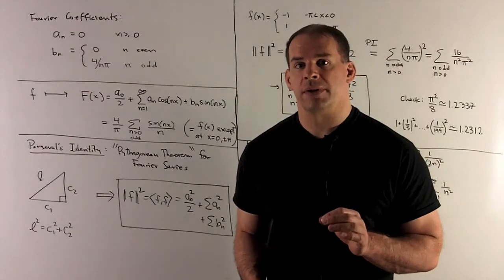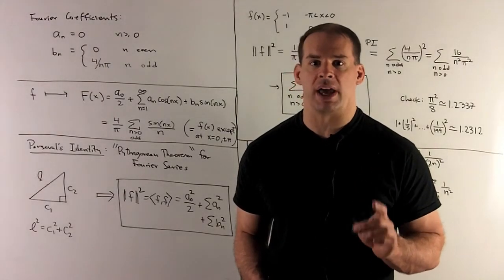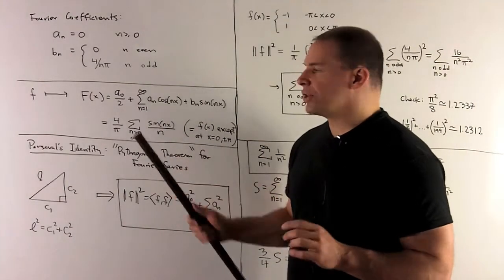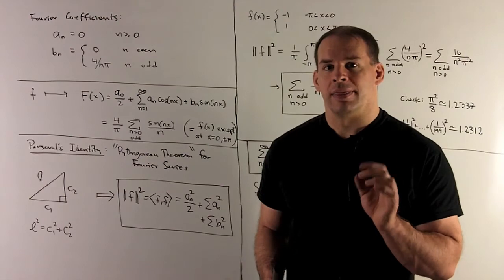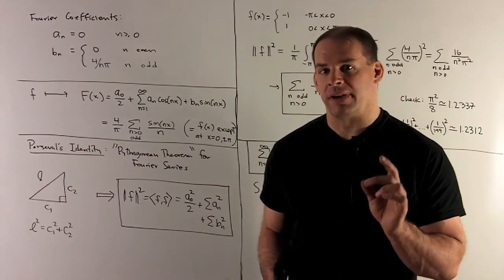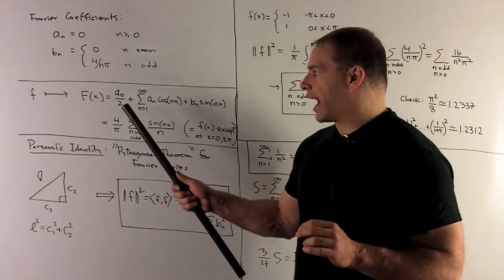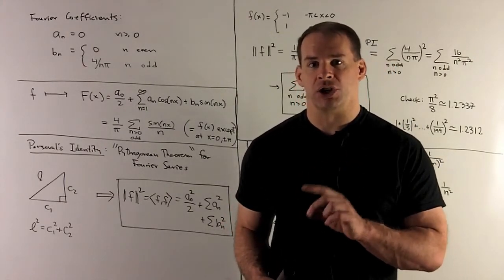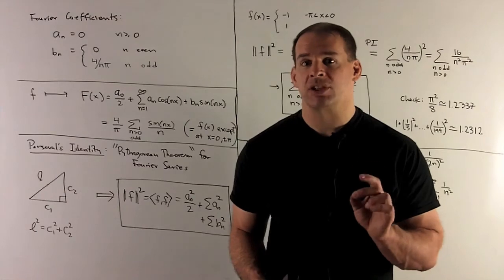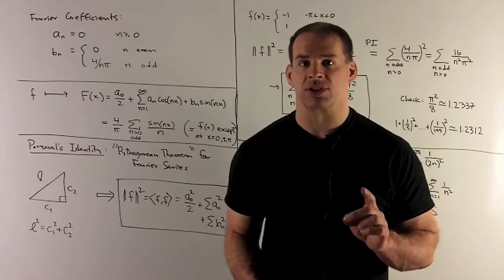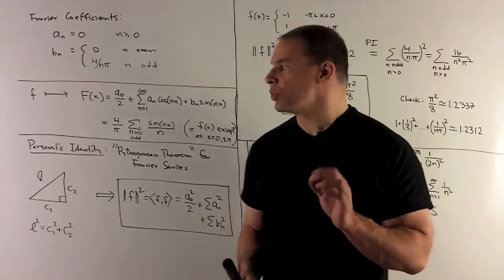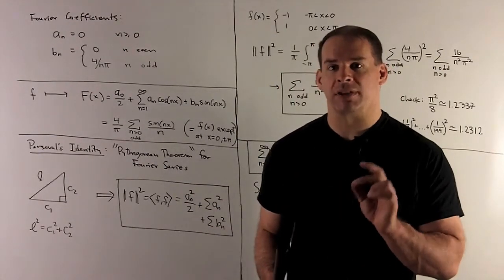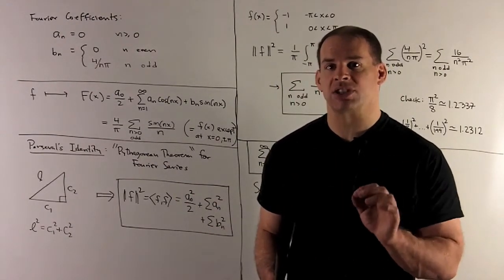With the Fourier coefficients, we can now assign a Fourier series to our original function f. So the recipe, we take a zero over two. Why two? That's because we didn't use a unit vector when we defined a zero. So this is going to be the correction. Then we take the sum over all positive integers of a sub n, cosine nx, plus b sub n, sine of nx. In our special case, we're going to get four over pi times the sum over all positive odd integers of sine of nx over n.